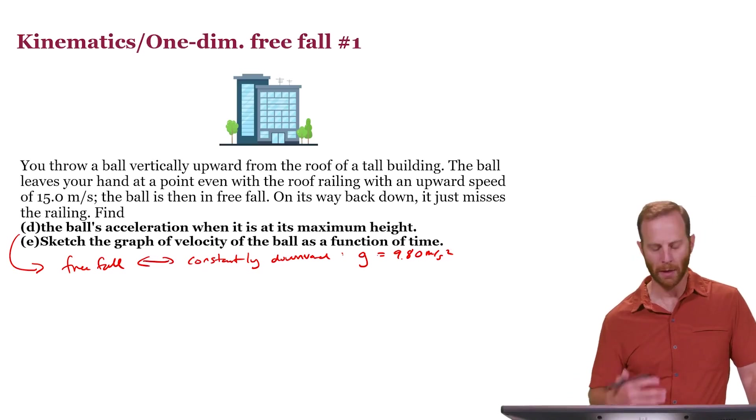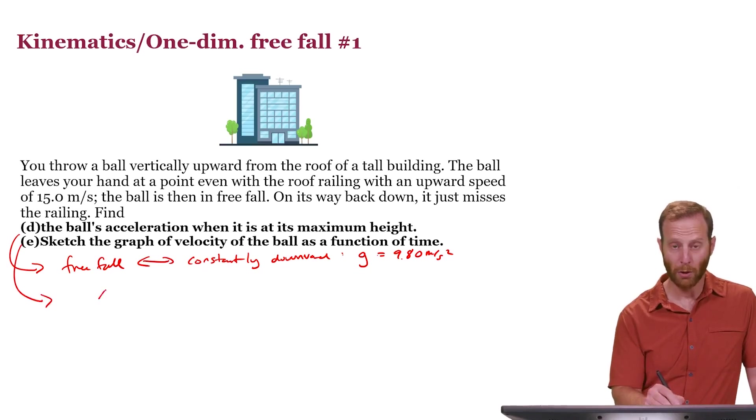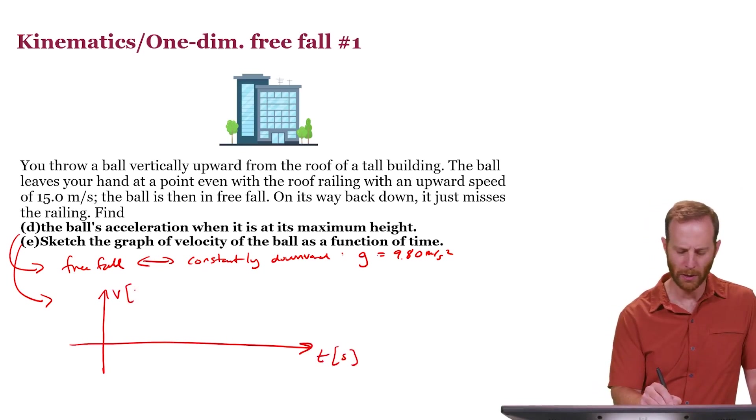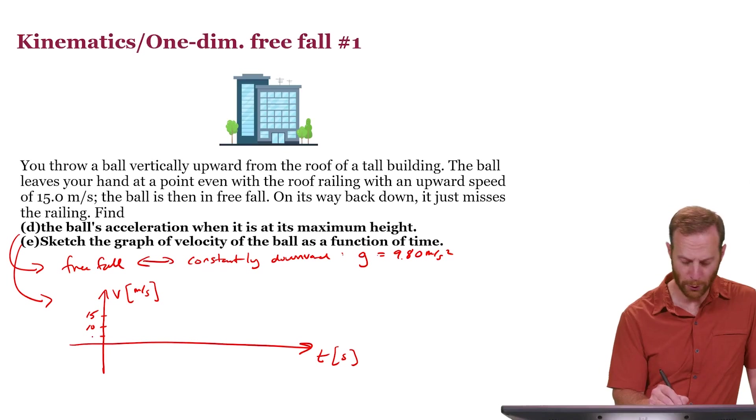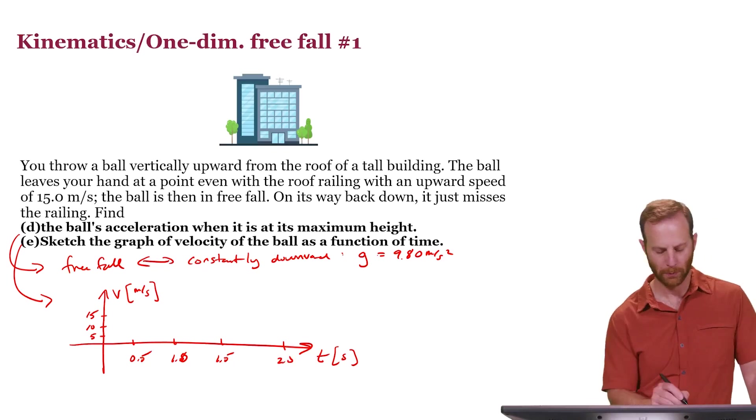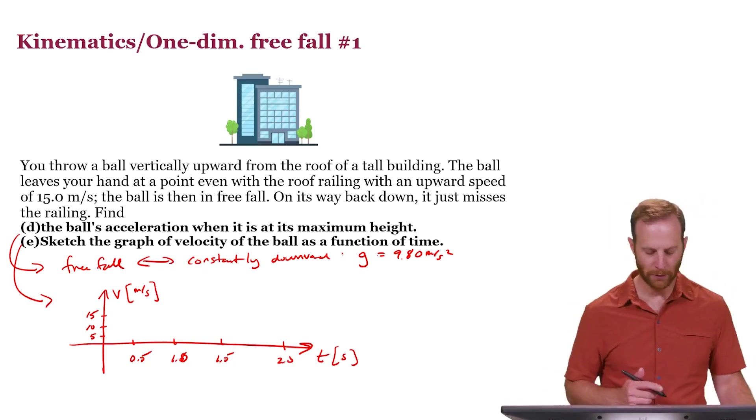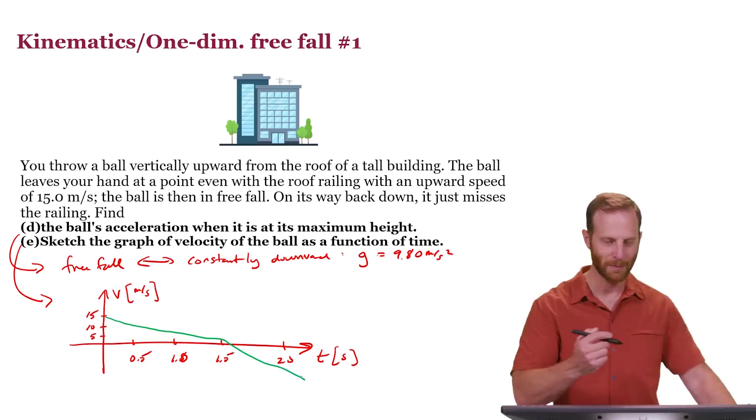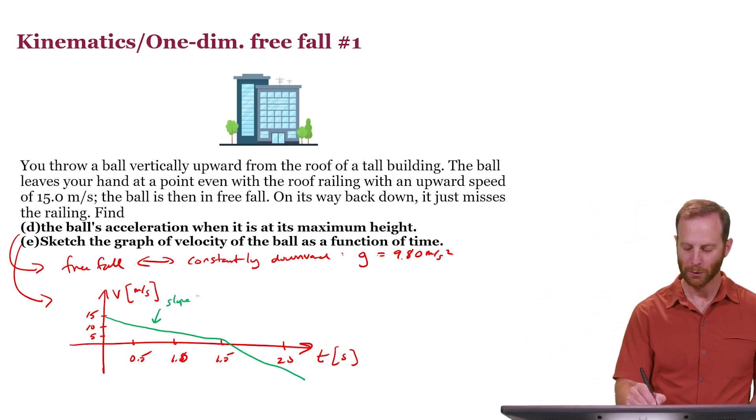Let's talk about Part E, then, and this will help to justify this solution in Part D. We sketch a graph of the velocity as a function of time. Time in seconds and velocity in meters per second. We start off with the value of the velocity being 15 meters per second. It's positive because it's on its way up. And let's let this be half of a second. This is one. This is one and a half seconds. And this is two seconds. Well, this velocity graph starts off at 15. And because it's feeling a constant negative acceleration, that is to say the velocity is changing linearly, this comes down following a straight line.